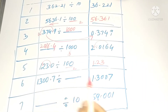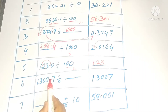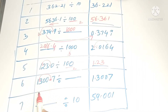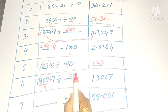In the sixth one, 1300.7 is there and it became 1.3, which means the decimal point shifted three places to the left. Three places means we have to put three zeros — so in this blank we have to write 1000.